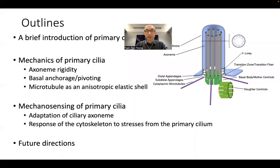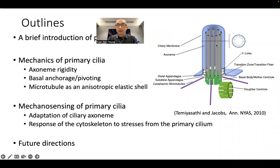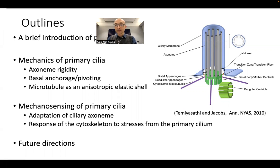Here's the outline. First, I'll give you a brief introduction of the primary cilium. It's a microtubule-based structure with nine doublets in the cross section shown here. These nine doublets are enclosed by a cilium membrane. This whole enclosed compartment is referred to as an axoneme.